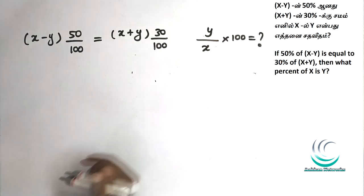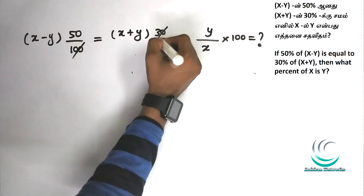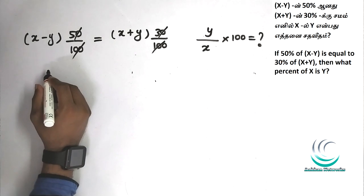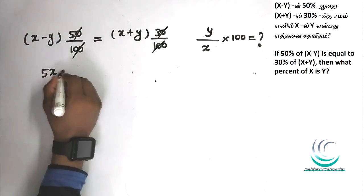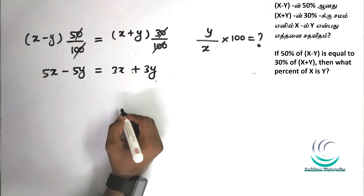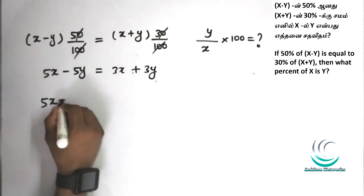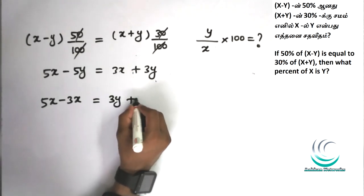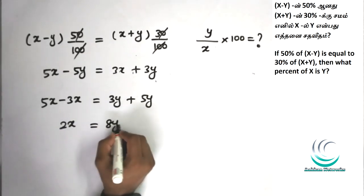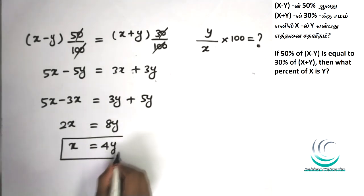So here we have to form the equation and cancel. 0 and 0 cancel. Remaining 5 and 3 multiply. So 5x minus 5y, then 3y, and x minus 3x equal 3y, plus 5y gives 4y.